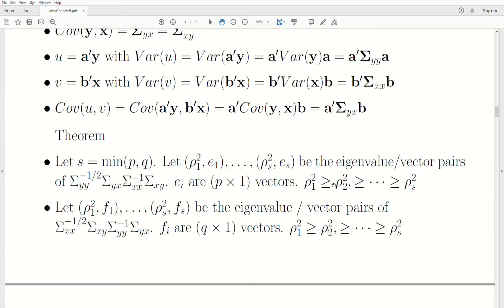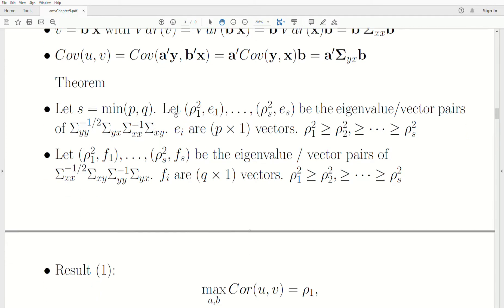Now, the theorem, which is the workhorse of this chapter, we let s be the minimum of p and q. So it's how many variables are in the Ys, how many variables are in the Xs. We just let s be that minimum. And now we let the eigenvalue vector pairs, rho 1 squared, e1, all the way to rho s squared, es. So we just take the s pairs of this crazy matrix right here.